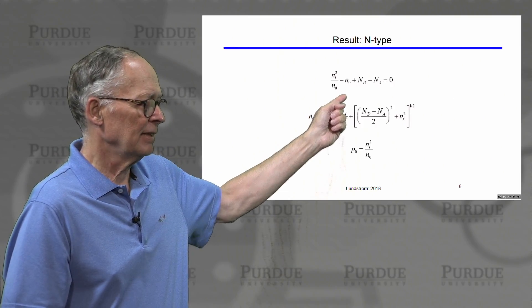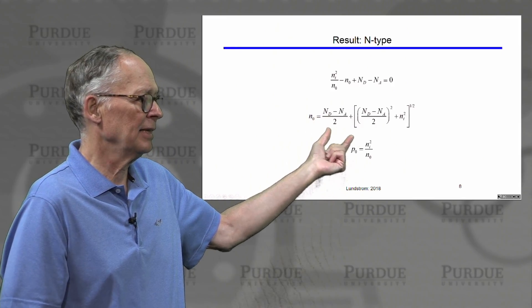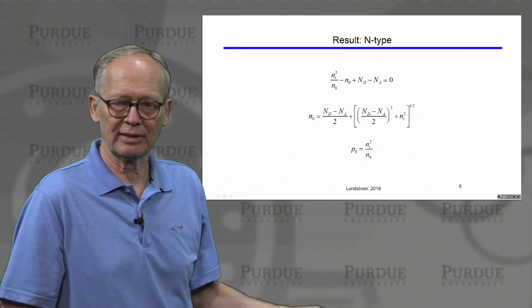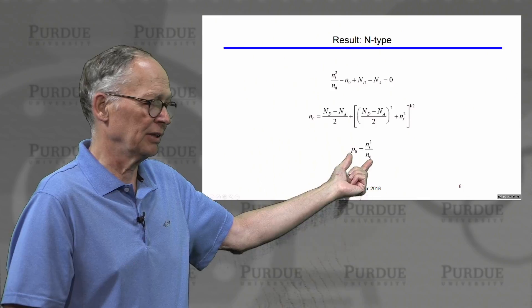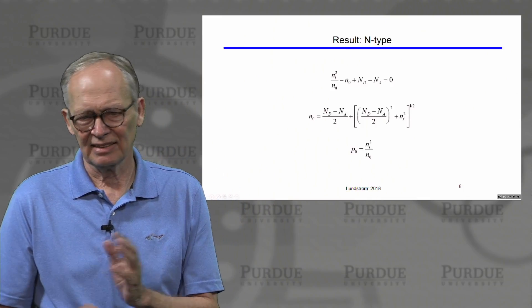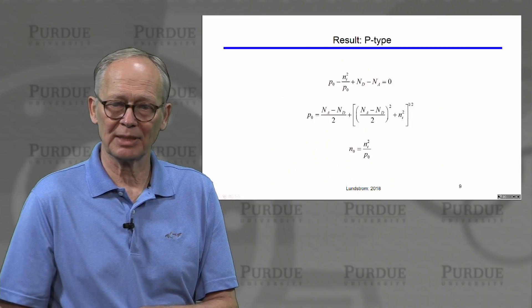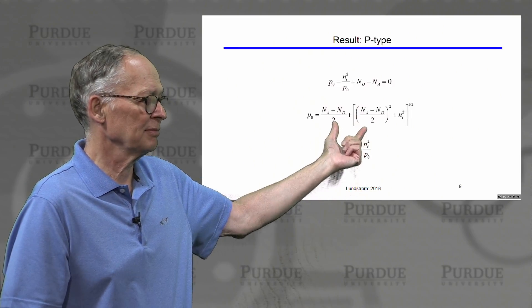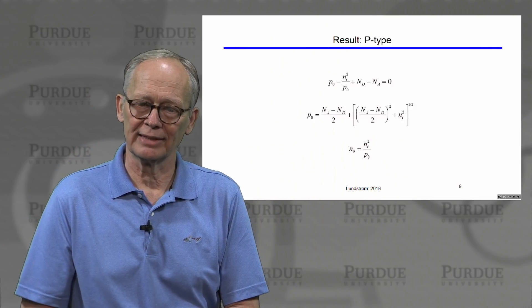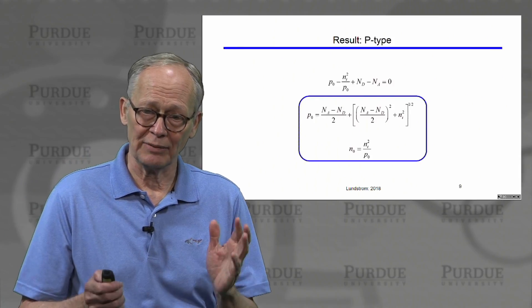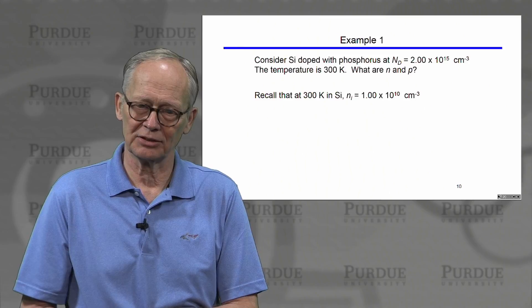Taking the equation for N and solving the quadratic, the answer is: half the net doping (N_D minus N_A), plus the square root of half the net doping squared plus n_i squared. That gives the electron density; then the hole density is just n_i squared over N₀. This is the equation for an N-type semiconductor. For a P-type semiconductor, we solve for the hole concentration using a similar quadratic expression, then determine the electron density from N × P equals n_i squared.